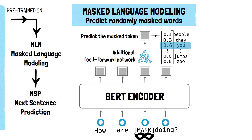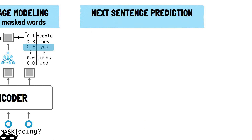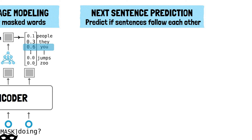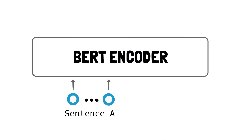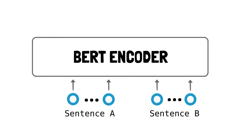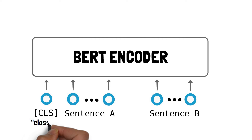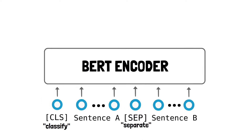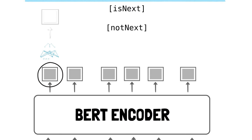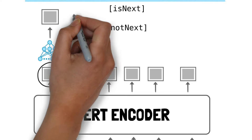For next sentence prediction, BERT learns to predict whether two sentences naturally follow each other, which enhances its ability to understand the flow and relationships of ideas in text. Given two spans of text, the model predicts if these two spans appeared sequentially in the training data, outputting either 'is next' or 'not next.' The first span starts with a special token CLS (for classify) and the two spans are separated by a special token SEP (for separate). After processing the two spans, the first output vector — the one corresponding to the CLS input token — is passed to a separate neural network for binary classification into 'is next' or 'not next.'